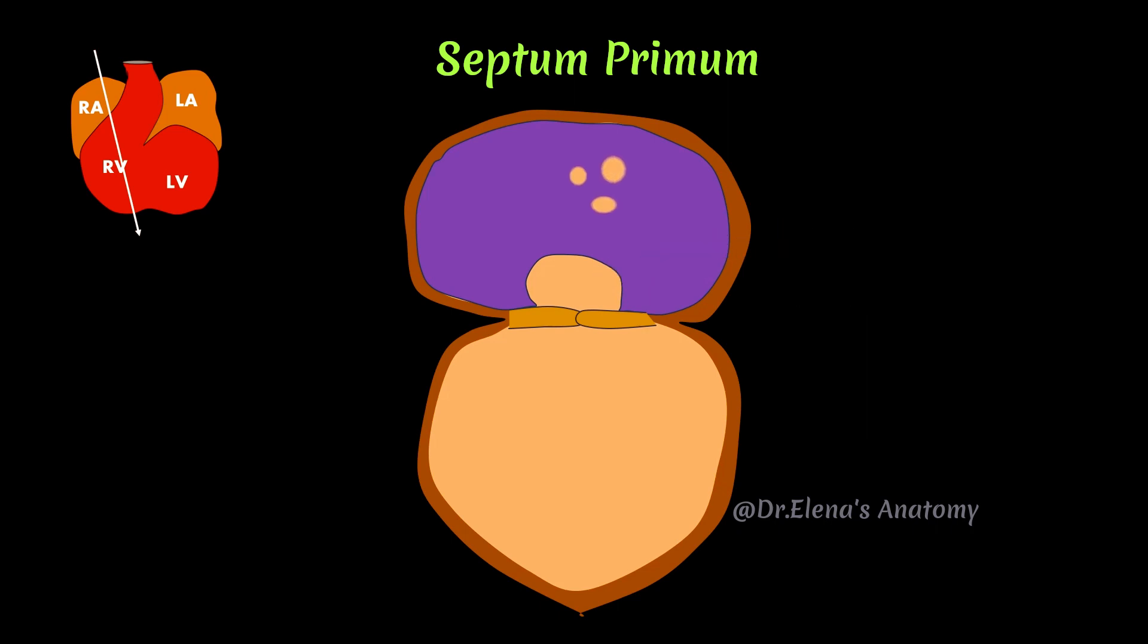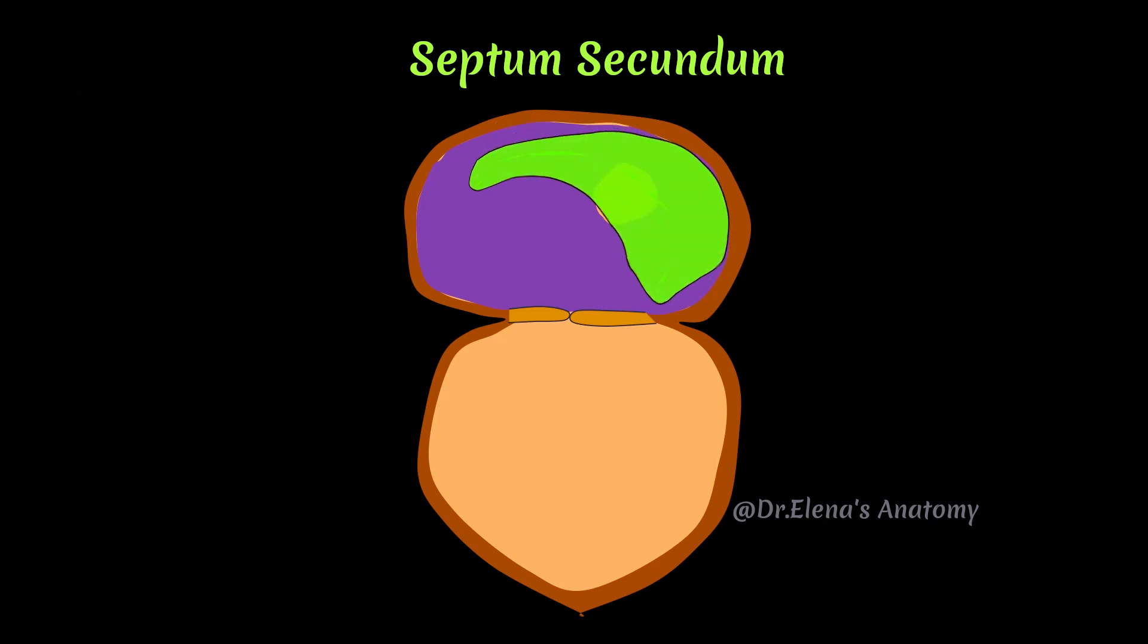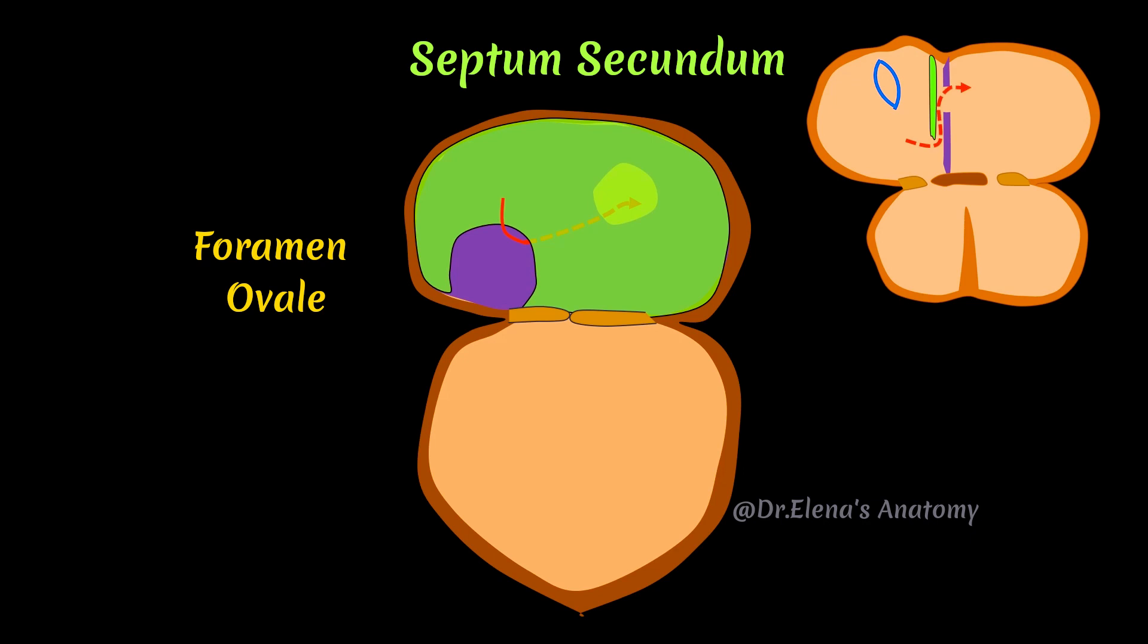The cephalic part of septum primum undergoes apoptosis and forms foramen secundum. Now the septum secundum grows towards septum intermedium and overlaps foramen secundum and the valvular passage thus formed is known as foramen ovale which allows the blood to flow from right atrium to left atrium.